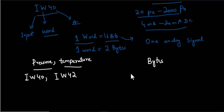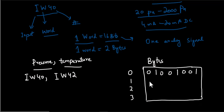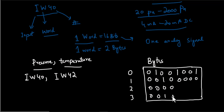Let me draw the diagram of the bytes: byte 0, byte 1, byte 2, byte 3. The addressing of byte 0 has a number of bits. Each byte is drawn showing its bits, so this is the 0th byte, first, second, third, and fourth byte.